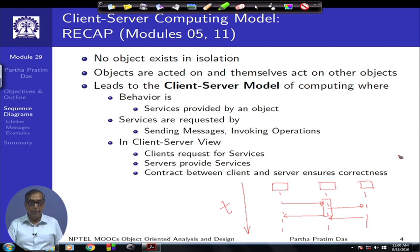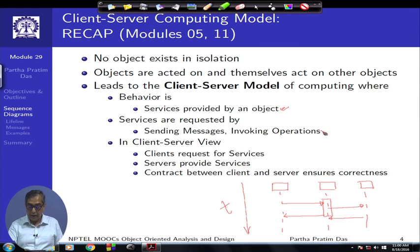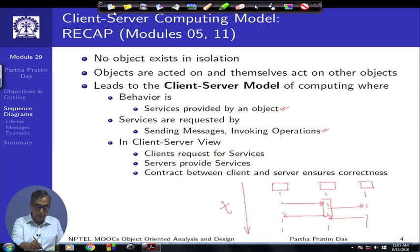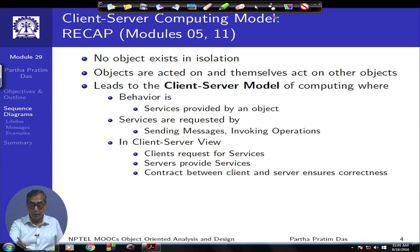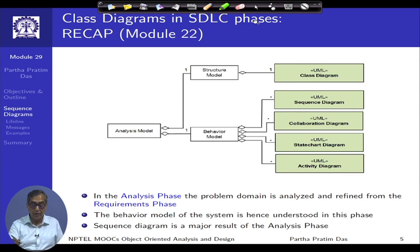If you recall, this was the basic client-server model. The sequence diagram is a first-level tool where we try to capture this behavior — the services provided by objects, how messages request certain services, and how those services are responded to. So we are going closer to representing the actual client-server version of the system that we are designing.